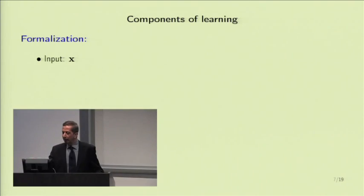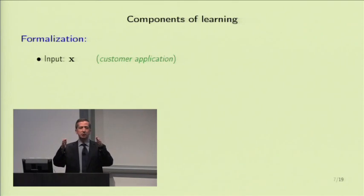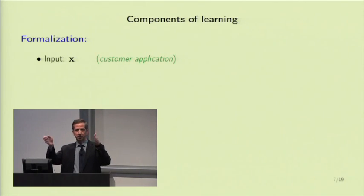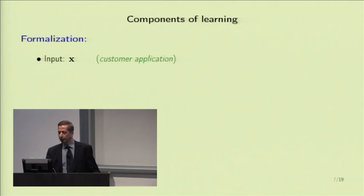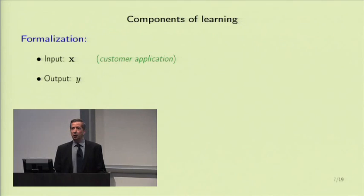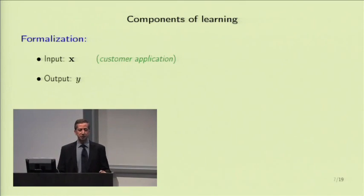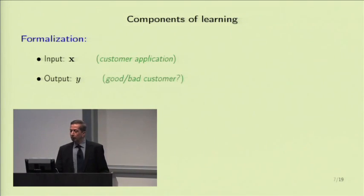Let's formalize this. We have an input called X — the customer application, which you can think of as a D-dimensional vector whose components are salary, years in residence, outstanding debt, whatever. Then we have the output Y, which is simply the decision: either to extend credit or not, represented as plus 1 and minus 1. And we have the target function — a function from the domain X, which is D-dimensional Euclidean space, to Y, the binary co-domain. This target function is the ideal credit approval formula, which we don't know.